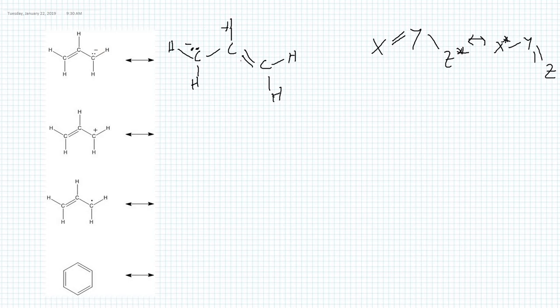Looking at the structure: we have a double bond, a single bond, and a lone pair here. We need to introduce a double bond — a pi bond — at the new position. To do this, we use the lone pair electrons and push them to form a new pi bond. The existing pi bond must be broken, and its electrons become a lone pair on the other carbon. That's the first case.